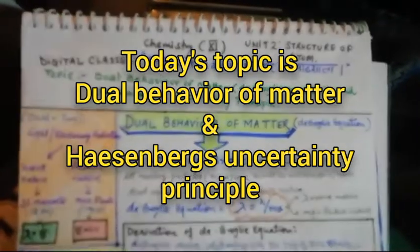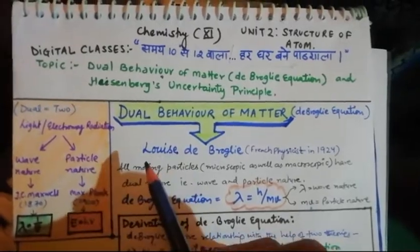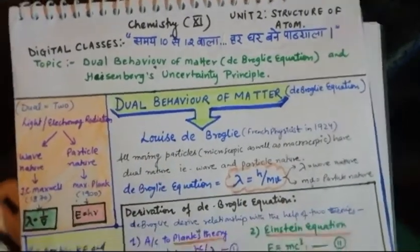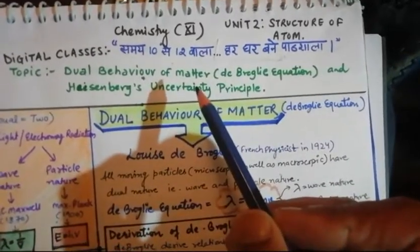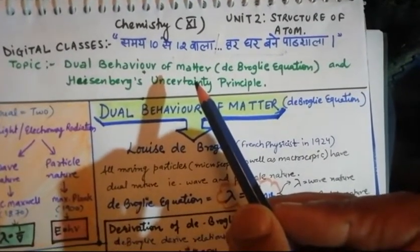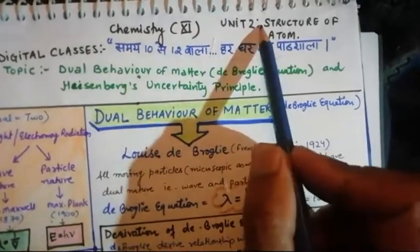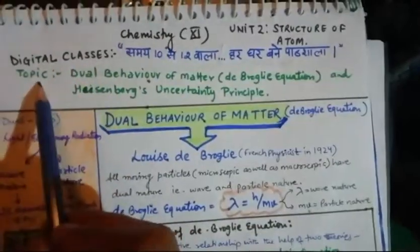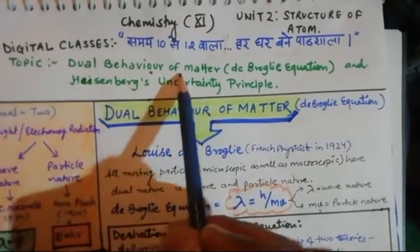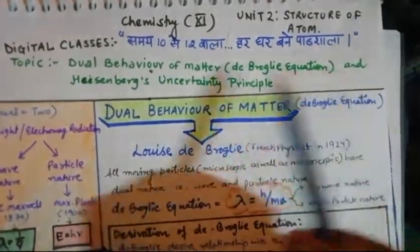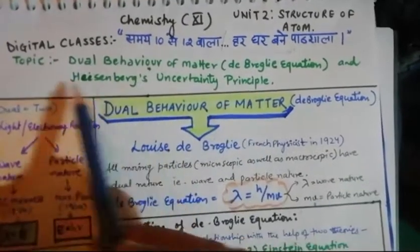Hello dear students, good morning to each one of you. Hope you all are fine and enjoying these digital classes. Yesterday in my video I told you about Bohr's model and its limitations. So today in Unit 2, Structure of Atom, we are going to study about the next topic — that is dual behavior of matter, the de Broglie equation, and the Heisenberg uncertainty principle.